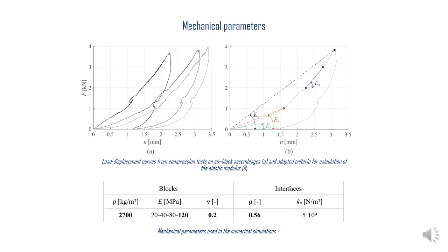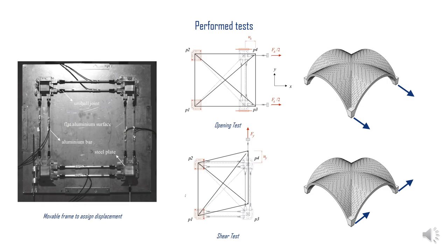The load-displacement curves from the compression tests are nonlinear, so four different values of E have been estimated and adopted in the analysis. The contact stiffness Kn has been calibrated through a convergence analysis to simulate an almost rigid contact. Of the several experimental tests performed, two have been chosen to be simulated numerically: an opening test consisting of the spread of two abutments while two are kept fixed, and a shear test consisting of the sliding of two abutments while the other two are kept fixed.